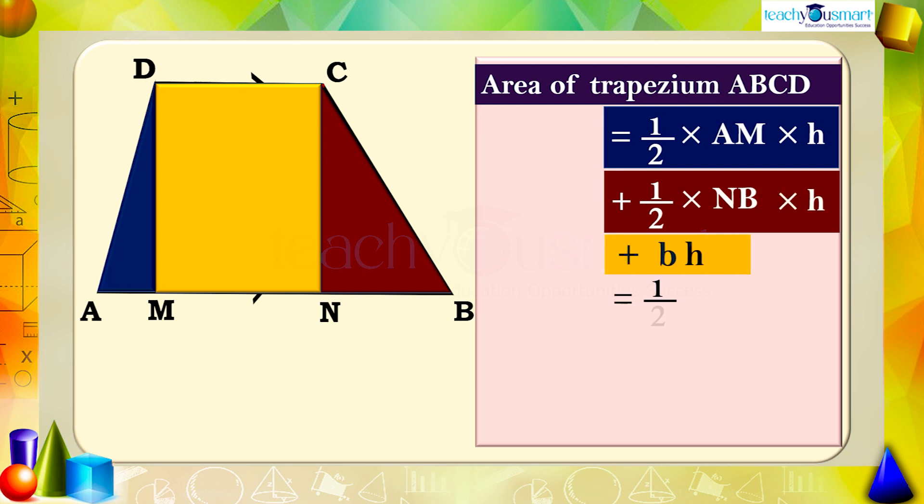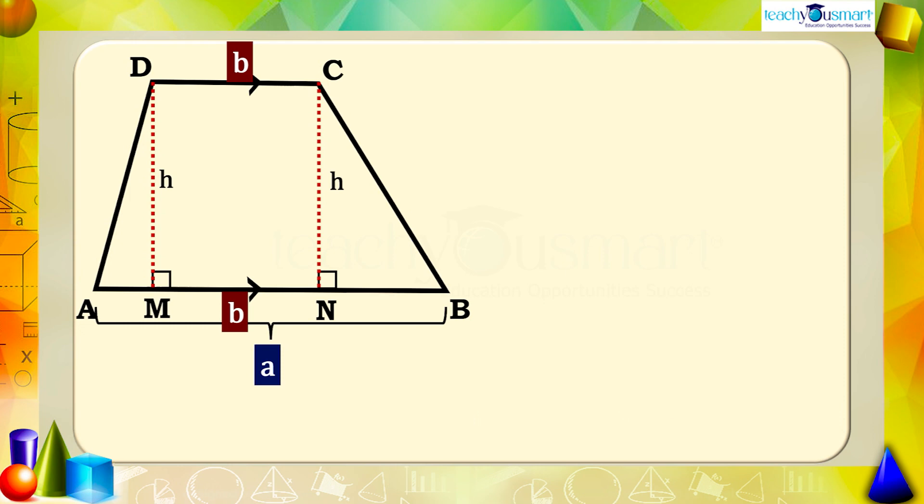Or, half multiplied by AM multiplied by h plus half multiplied by NB multiplied by h plus 2 by 2 bh. By taking half h as common, we get half h multiplied by the sum of AM, NB, and 2b.